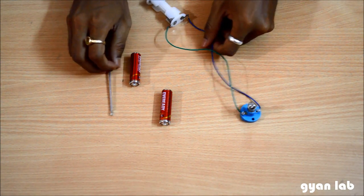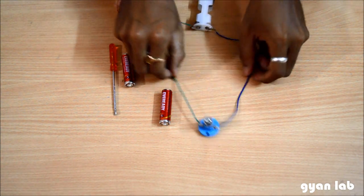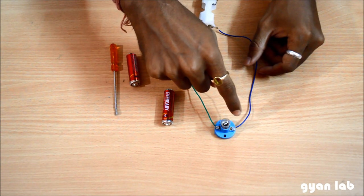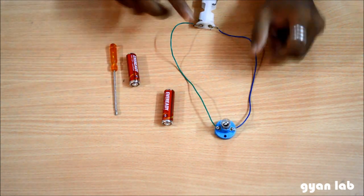And so, you can see that our circuit is in a complete loop. The wire goes from this end to the bulb, and this wire is from the bulb to the battery holder.